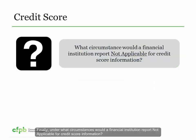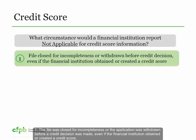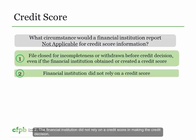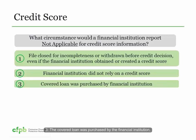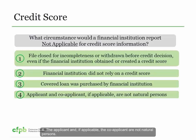Under what circumstances would a financial institution report not applicable for credit score information? First, if the file was closed for incompleteness or the application was withdrawn before a credit decision was made, even if a credit score was obtained. Second, if the financial institution did not rely on a credit score in making the credit decision. Third, if the covered loan was purchased by the financial institution. Fourth, if the applicant and co-applicant, if applicable, are not natural persons.